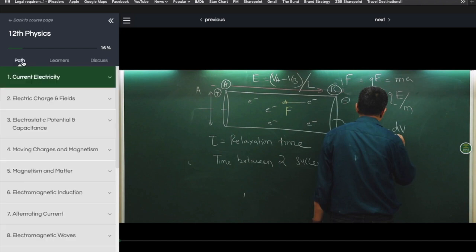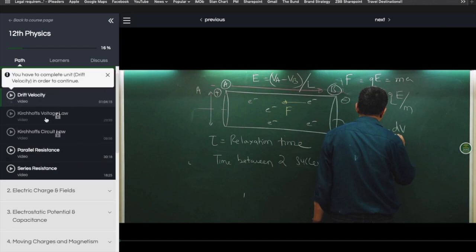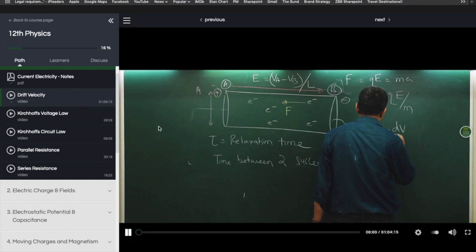So if we go back to path let's go to current electricity and I have seen the first PDF so I am now permitted to move to my first video which is drift velocity. If I try to click the next video it will not let you until you complete the previous one. So let's try and get this started.